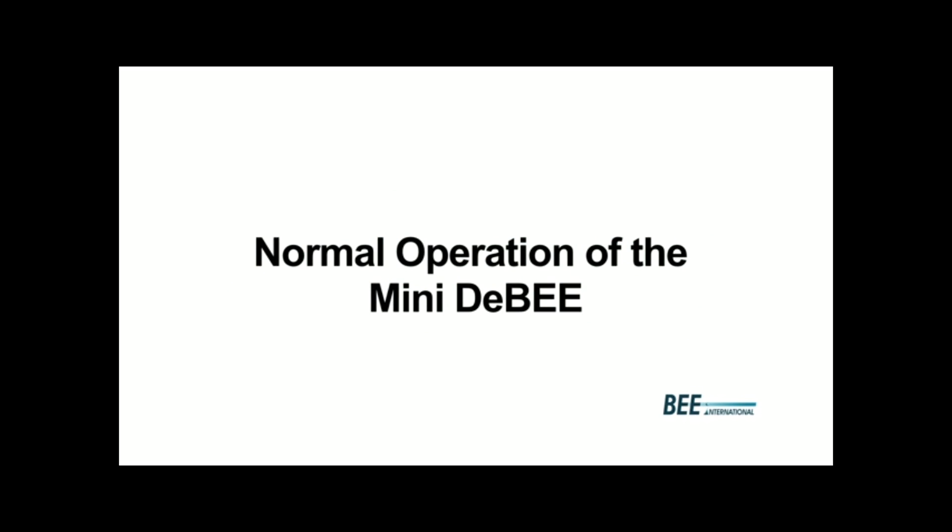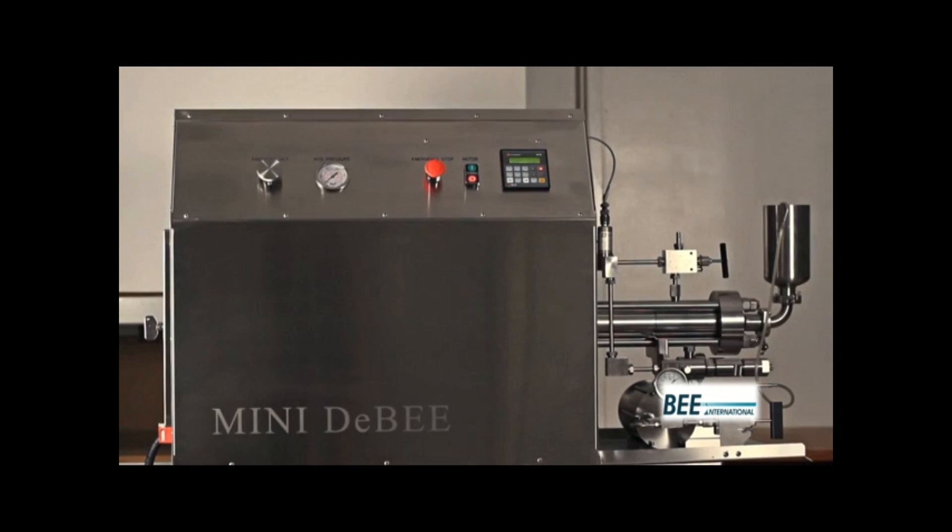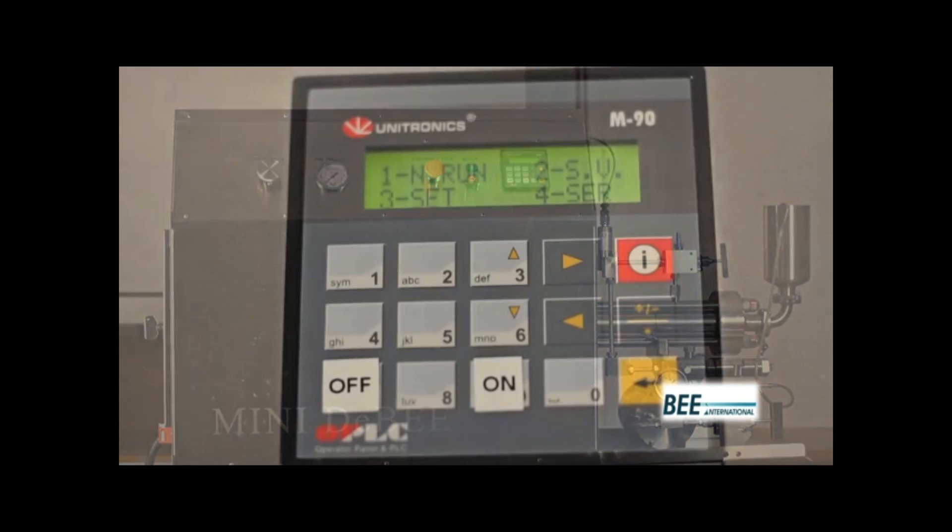Let's take a look at the MiniDB components. On the control panel, we have the pressure set dial to control the process pressure, the hydraulic pressure gauge, the emergency stop button, the motor on and off button, and the PLC where operational controls are located.